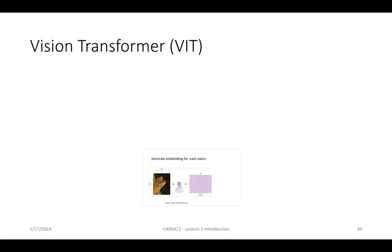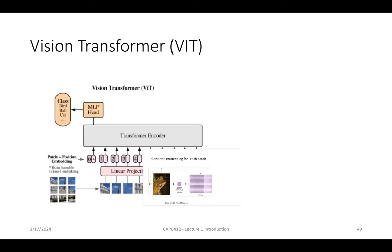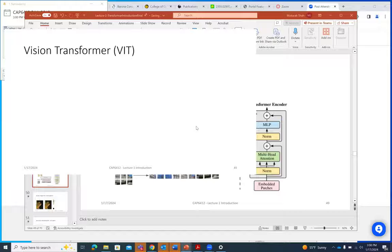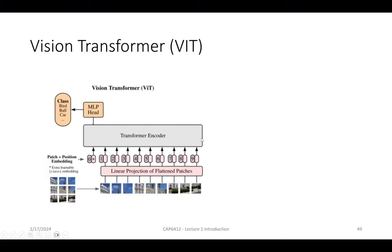Going into a little more detail on the Vision Transformer: we have an image, we get the 16x16 patches, and they go through linear projection to get the embedding dimension we want. Then there is positional encoding, as discussed, and then the Transformer encoder. For image classification, we add an MLP head at the end to predict which class a particular image belongs to. That is the ViT Vision Transformer.